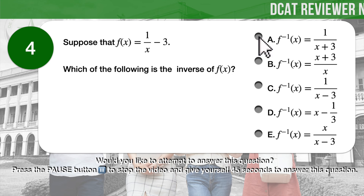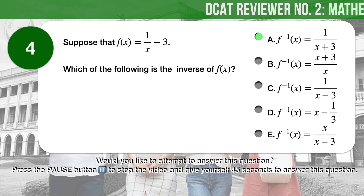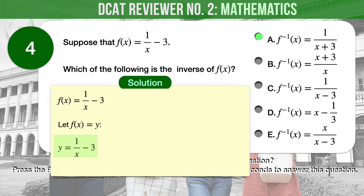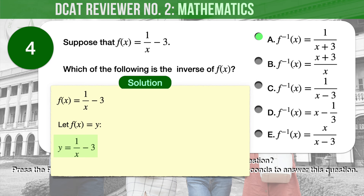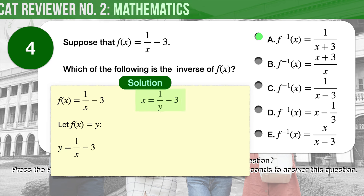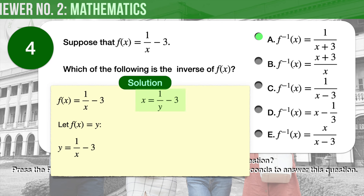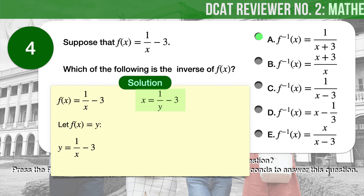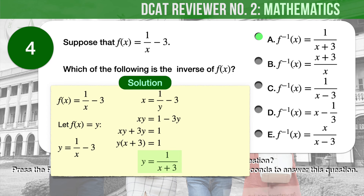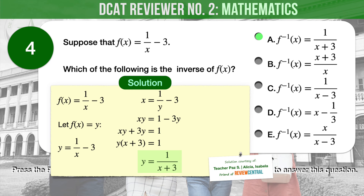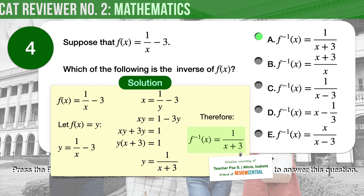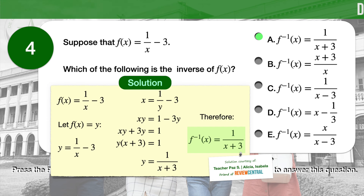The correct answer is A: inverse f(x) equals 1 over the quantity x plus 3. Step 1: Let f(x) equal y. Therefore, y equals 1 over x minus 3. Step 2: Get the inverse by swapping x and y: x equals 1 over y minus 3. Step 3: Solve for y. We arrive at y equals 1 over the quantity x plus 3. Step 4: Therefore, the inverse f(x) equals 1 over the quantity x plus 3.